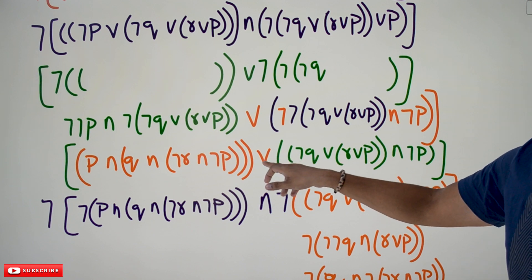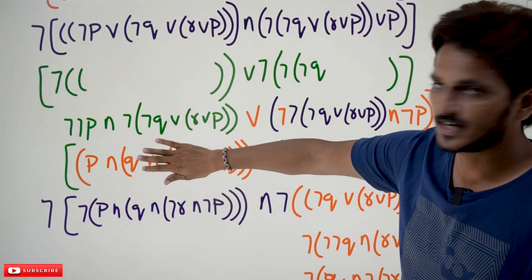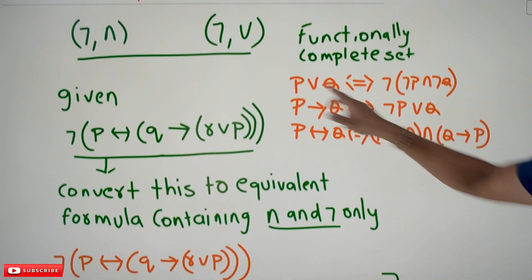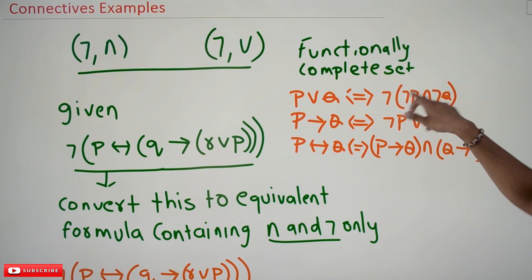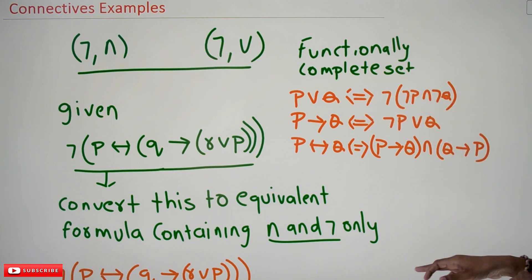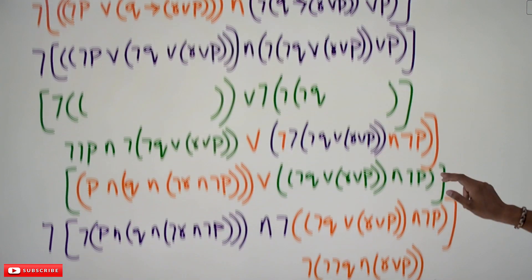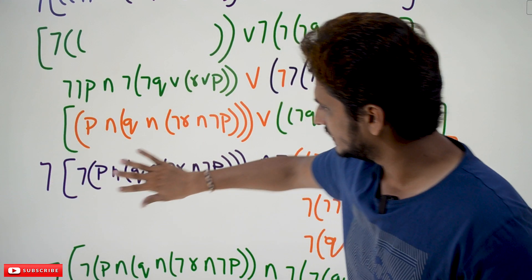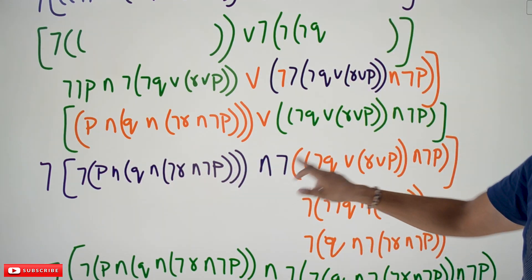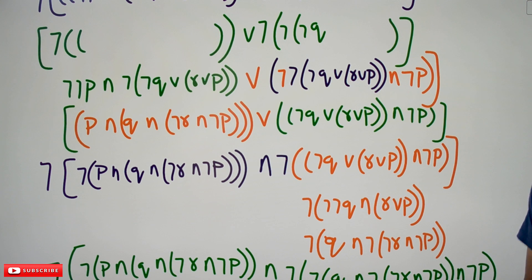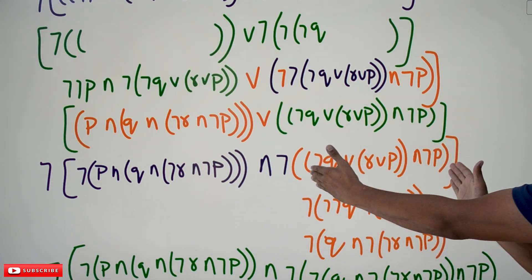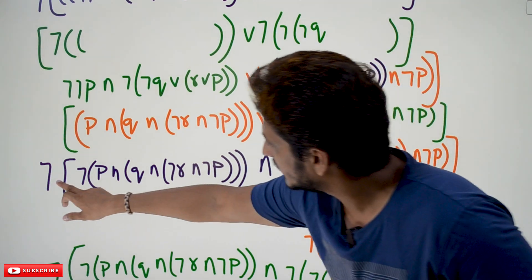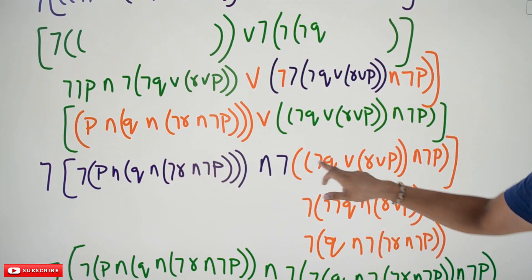We still have disjunction, which we need to convert into conjunction. Taking the left part as x and the right part as y, x disjunction y can be written as negation of (negation x conjunction negation y) — applying De Morgan's law. So we apply this: x disjunction y becomes negation of negation x, conjunction negation y. This negation applies to the entire y. The entire equation now contains only negations and conjunctions.